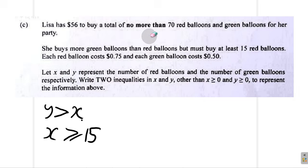And oh, the total number of balloons. Let's see. No more than 70 red balloons and green balloons. Why didn't they just say no more than 70 balloons? I saw this 70 red balloons, so I was looking for how many green balloons here. So X plus Y, the total number of balloons, should be less than or equal to 70.